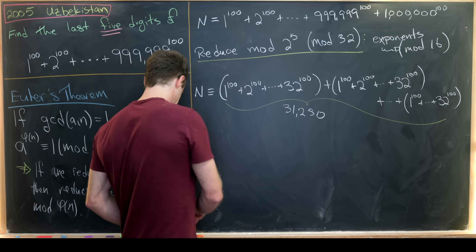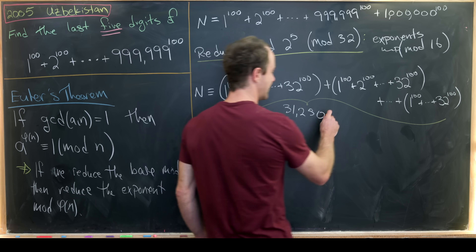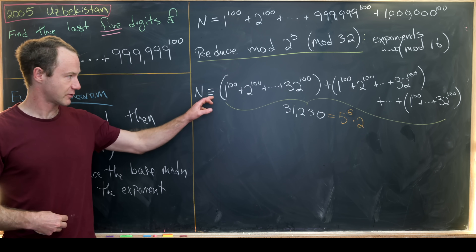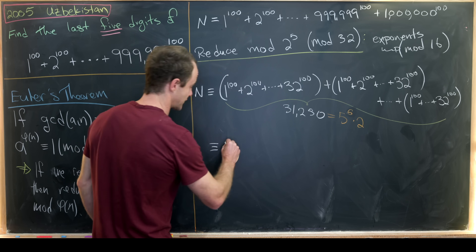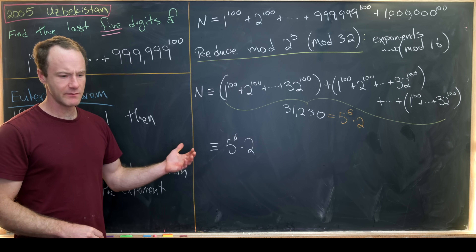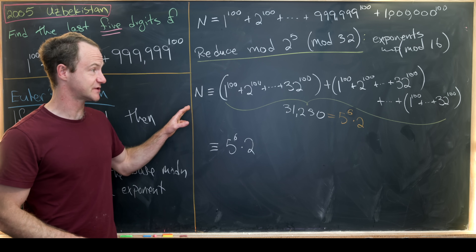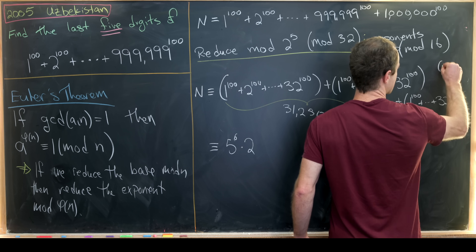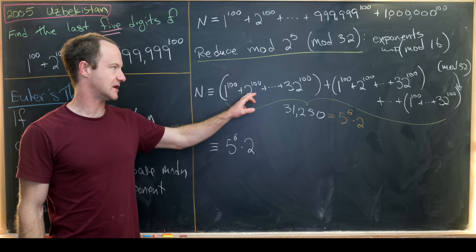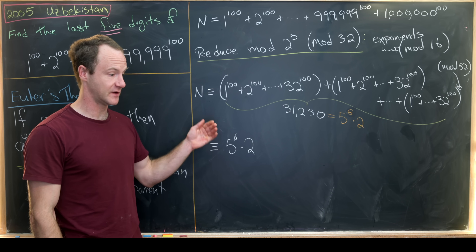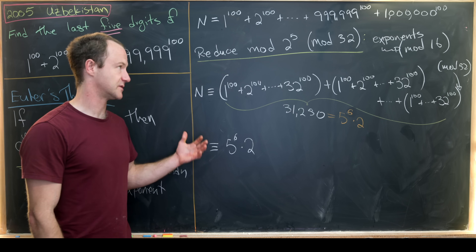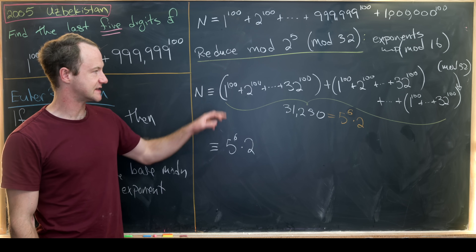The number of chunks is 31,250, which factors as 5^6 × 2^1. Since we're reducing mod 32, all even numbers in our sum vanish — they're attached to exponents larger than five, making them multiples of 2^5 = 32, so they're all zero mod 32. We only need to consider the odd numbers: 1^100 + 3^100 + ... + 15^100, then 17^100 + ... + 31^100.